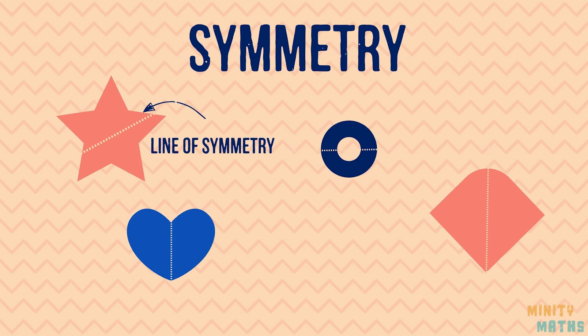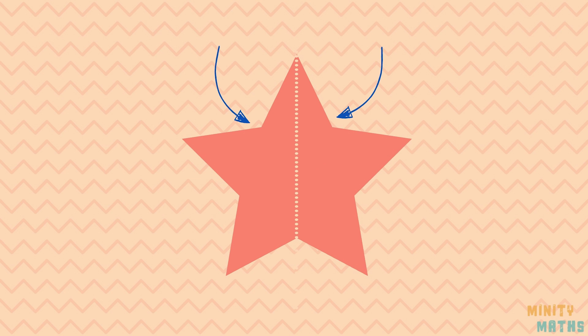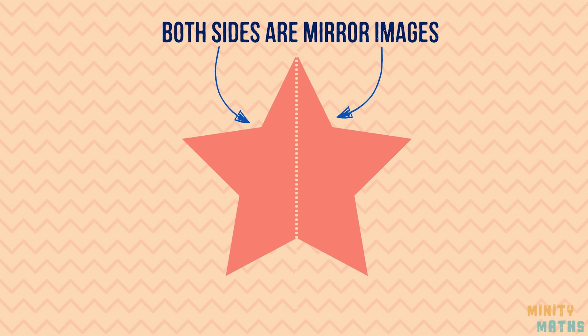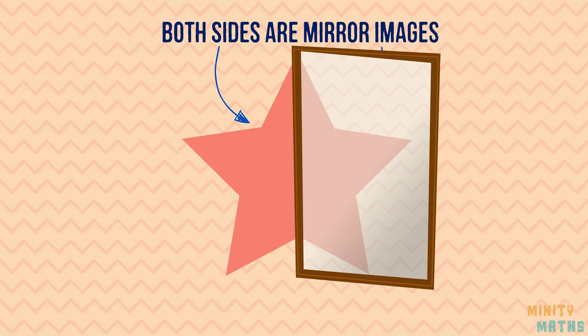So, if you were to fold the shape along the line, both halves would match equally. The same would apply if you were to place a mirror along the line. The reflection and the half should form the whole shape, unchanged.